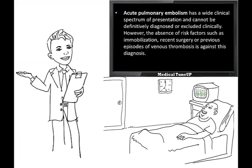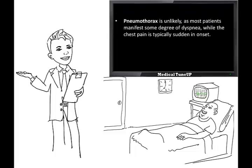Acute pulmonary embolism has a wide clinical spectrum of presentation and cannot be definitely diagnosed or excluded clinically. However, the absence of risk factors such as immobilization, recent surgeries, or previous episode of venous thrombosis is against this diagnosis. Pneumothorax is also unlikely as most patients manifest some degree of dyspnea while the chest pain is typically sudden in onset. Both conditions are ruled out.